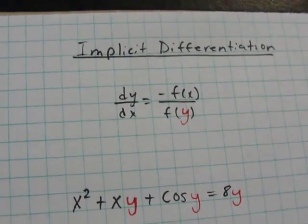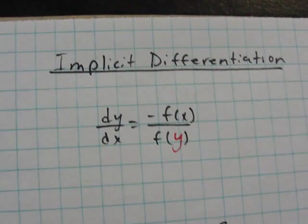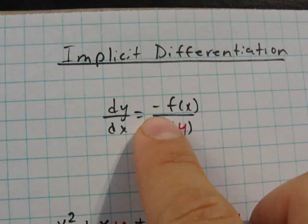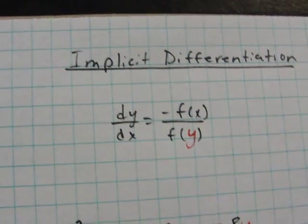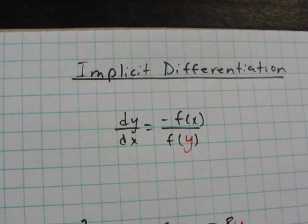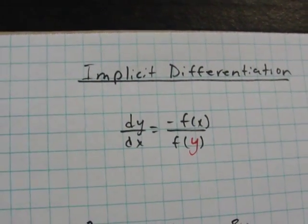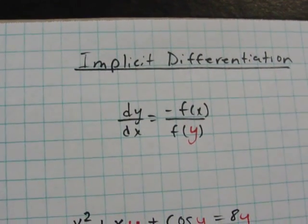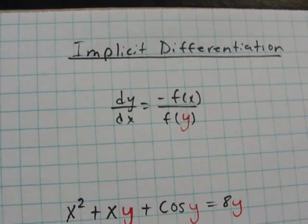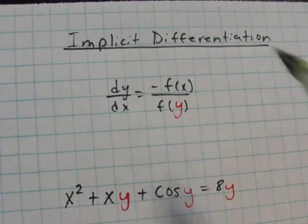Hey, what's going on YouTube? Today I'm going to be showing you how to use a shortcut for implicit differentiation. This is the formula you're going to be using: dy over dx equals negative f of x over f of y. This shortcut gets rid of having to distribute or getting your y primes on one side and your other stuff on the other side, so it really cleans up the equation. It's short and sweet and very effective, but the only problem is it only works for implicit differentiation.